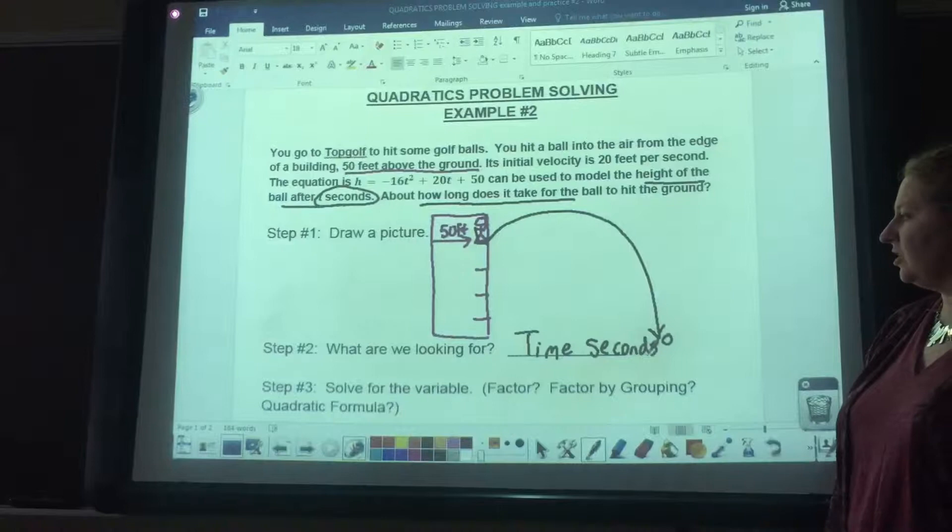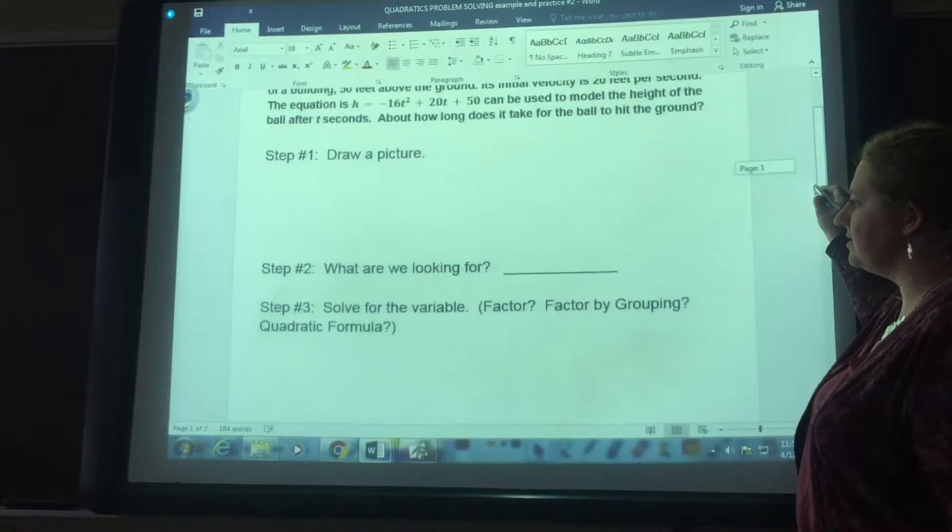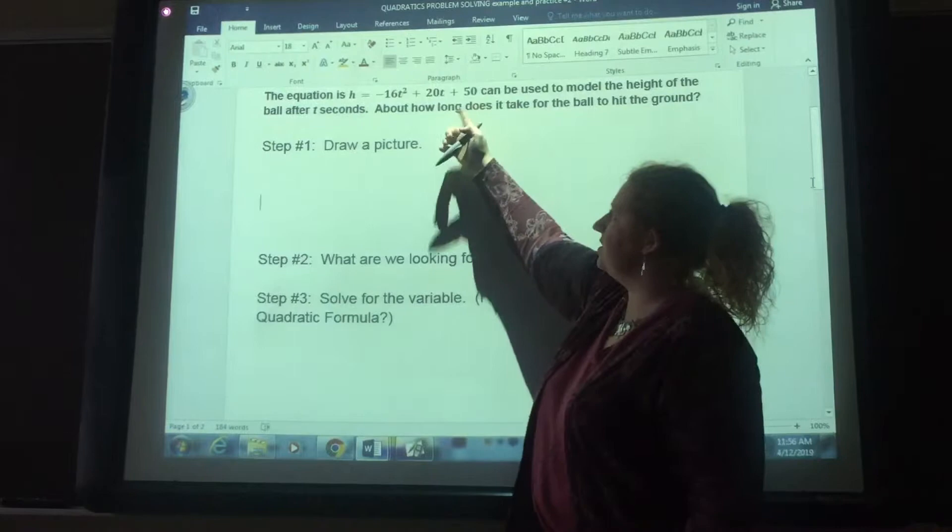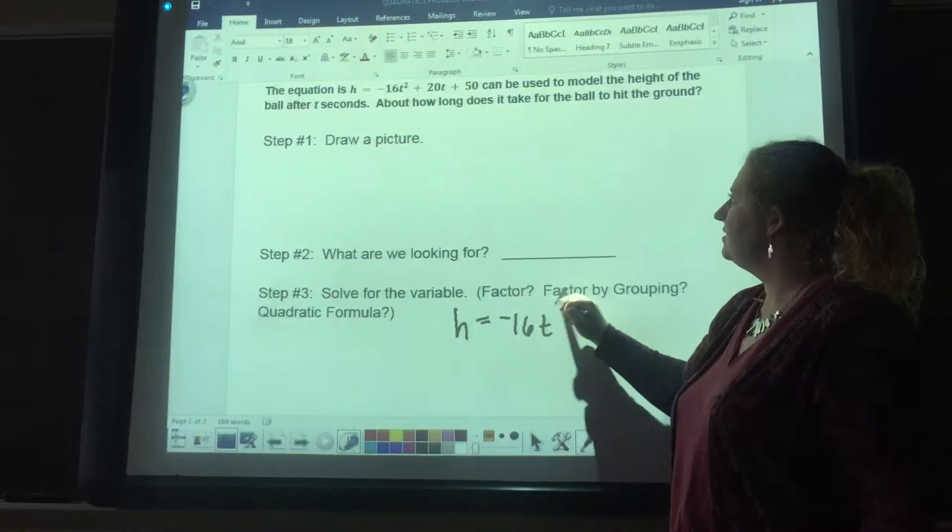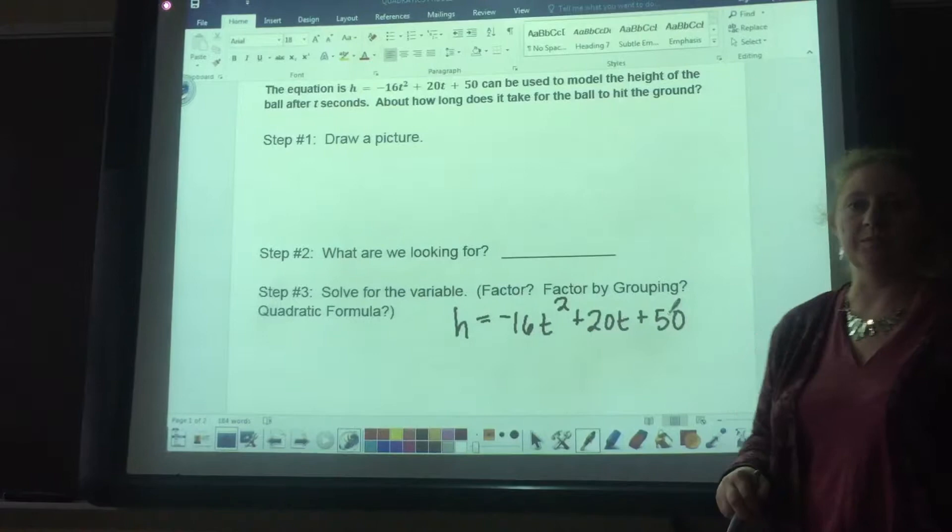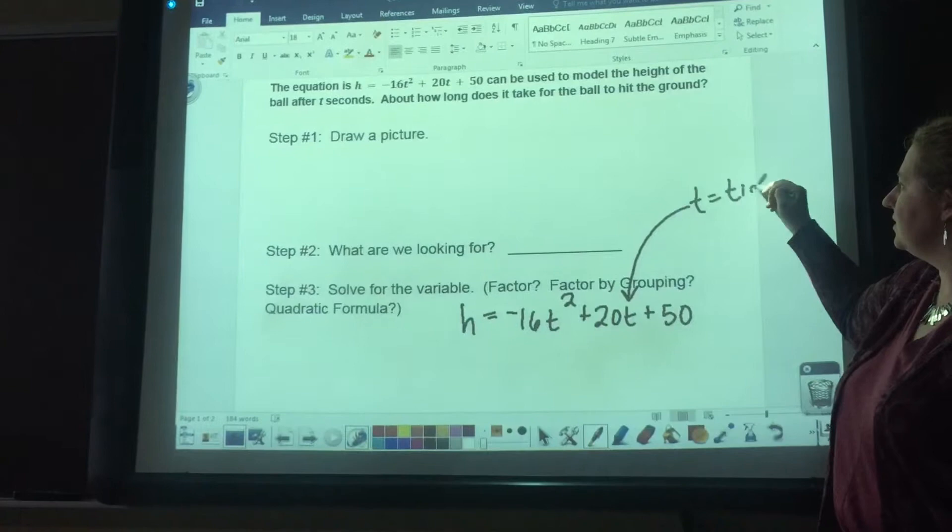I'm going to erase that picture, and now let's go into the math part. For step number three, it says solve for the variable. Let's go back to our equation. Our equation says h equals negative 16t squared plus 20t plus 50. We have two variables. Obviously we are solving for t, which equals time, which means we have to know h.